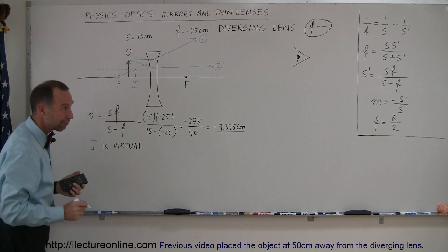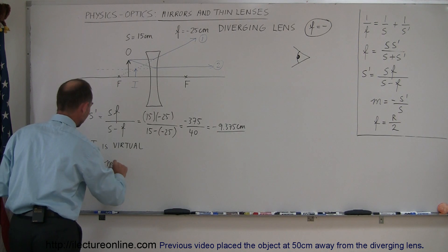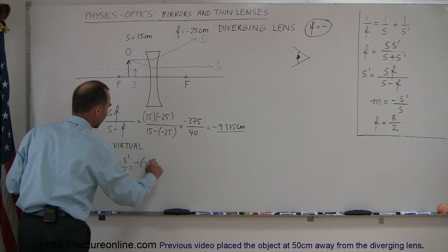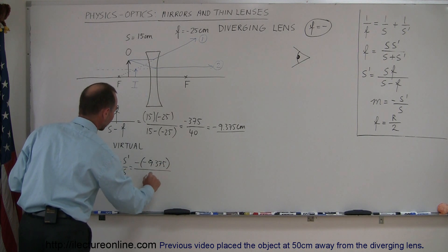Secondly, or thirdly, we want to find the magnification. Magnification is equal to minus S prime over S, which is a minus times a minus 9.375, divided by S, which was 15.